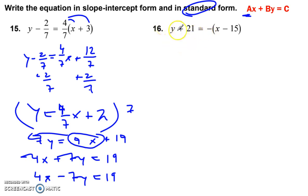Only thing I want to point out in number 16, there's a negative in front that also gets distributed. So when you do that, you get negative x plus 15. Alright. The rest of it is same procedure as ever.